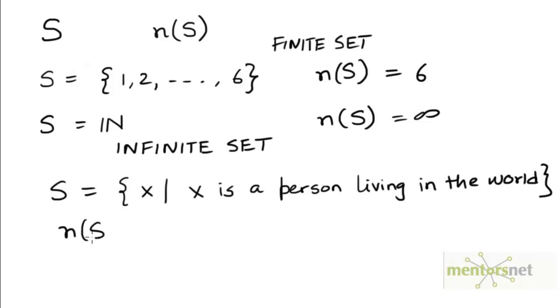The number of elements in the set S would thus be the present world population. Now we may not know exactly what this value is, but we know that it's going to be some finite value. And so S is going to be a finite set.